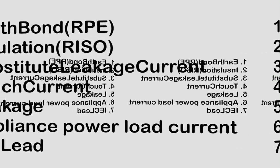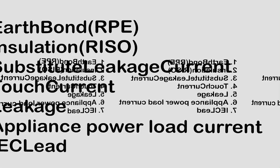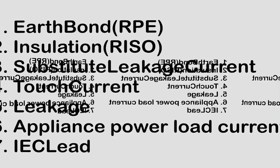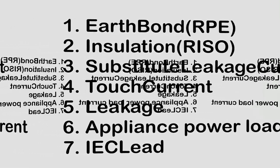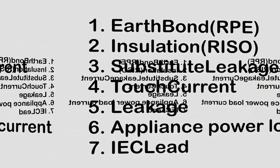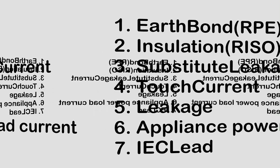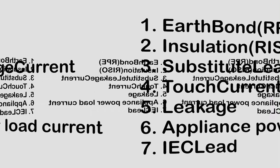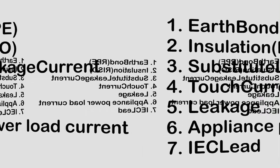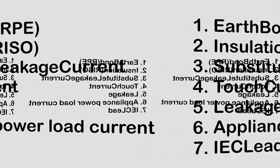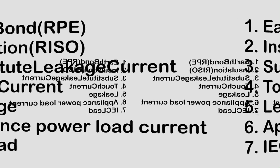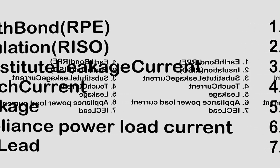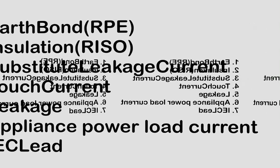The insulation test determines how effective the dielectric — that means the insulation — is in resisting the flow of electrical current. Third, we need to carry out the substitute leakage test. This applies a reduced AC voltage, typically 40 to 60 volts AC, between the line and neutral joined together and the earth conductor or test lead for Class 2 equipment.